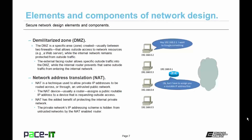NAT is a technique used to allow private IP addresses to be routed across or through an untrusted public network. The NAT device, which is usually a router, assigns a public routable IP address to a device that is requesting outside access. NAT has the added benefit of protecting the internal private network. The private network's IP addressing scheme is hidden from untrusted networks by the NAT-enabled router, thus making it harder for a hacker to gain access to internal network resources.